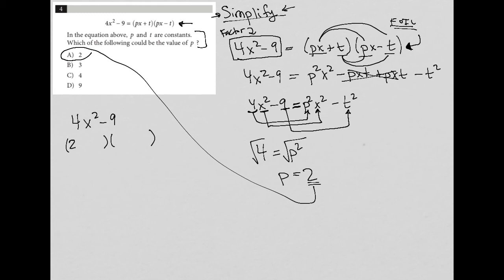The square root of the first term is 2x, so 2x and 2x. The square root of the second term is 3, so I'd have a minus 3 and a plus 3, right? And I could have just started from there. I could have said 2x minus 3 times 2x plus 3 is equal to my px plus t and px minus t. And from there, I would have seen,